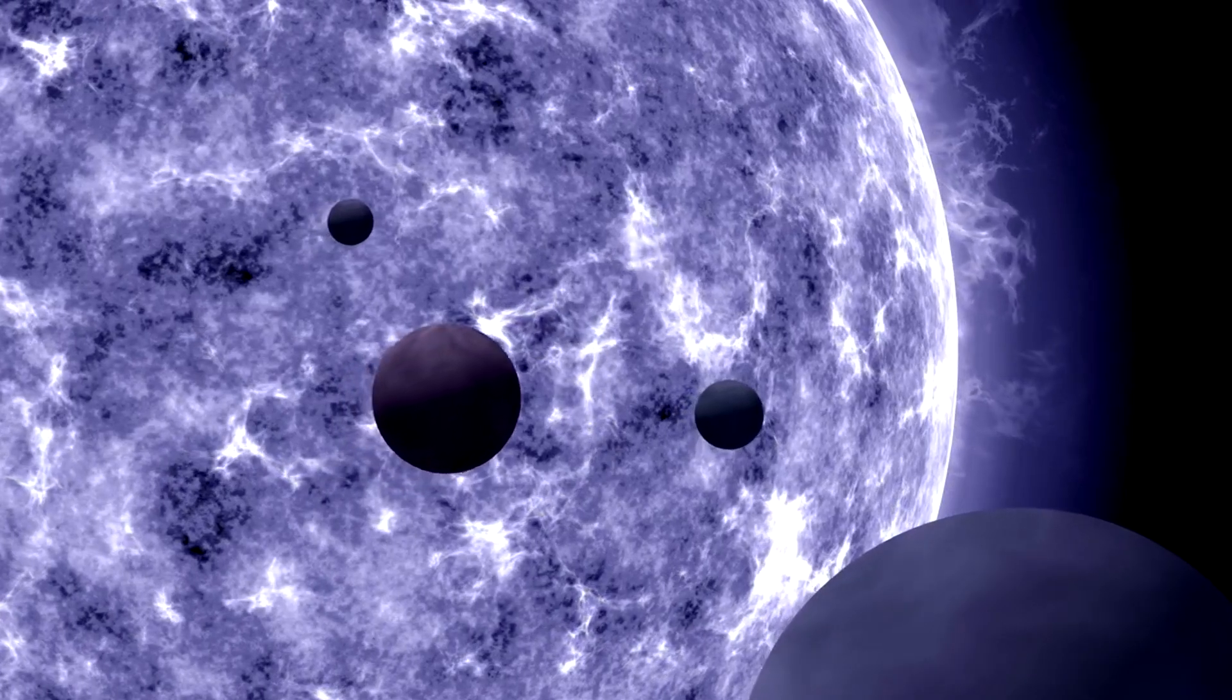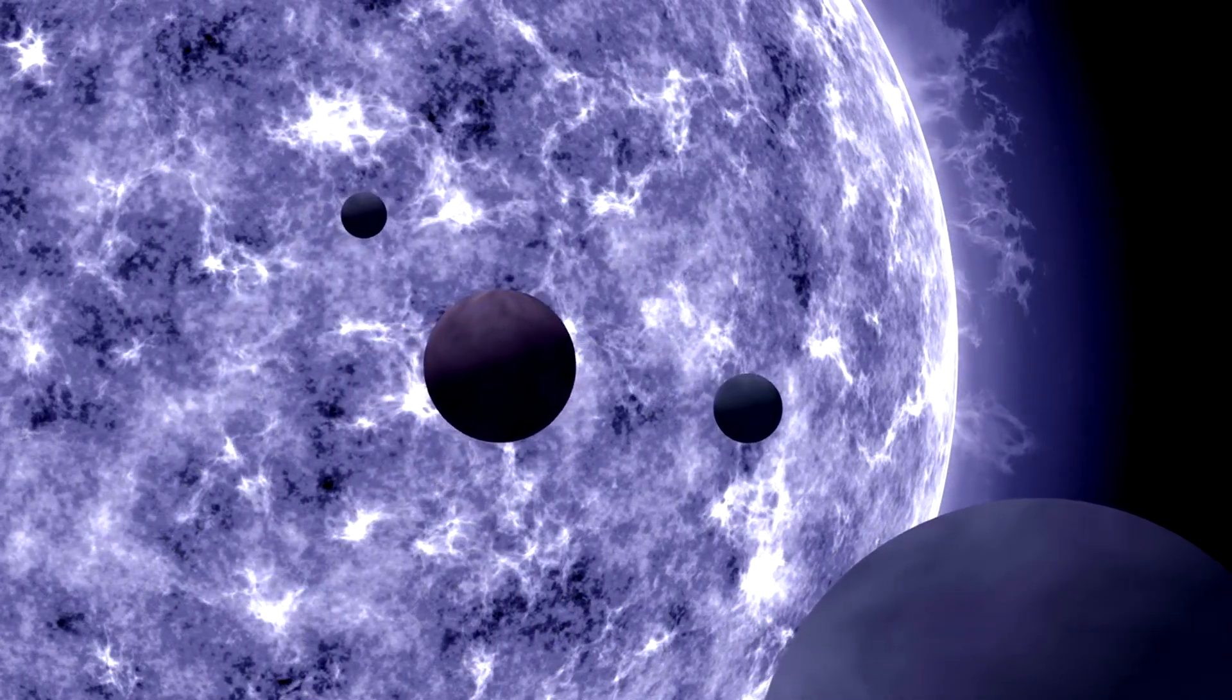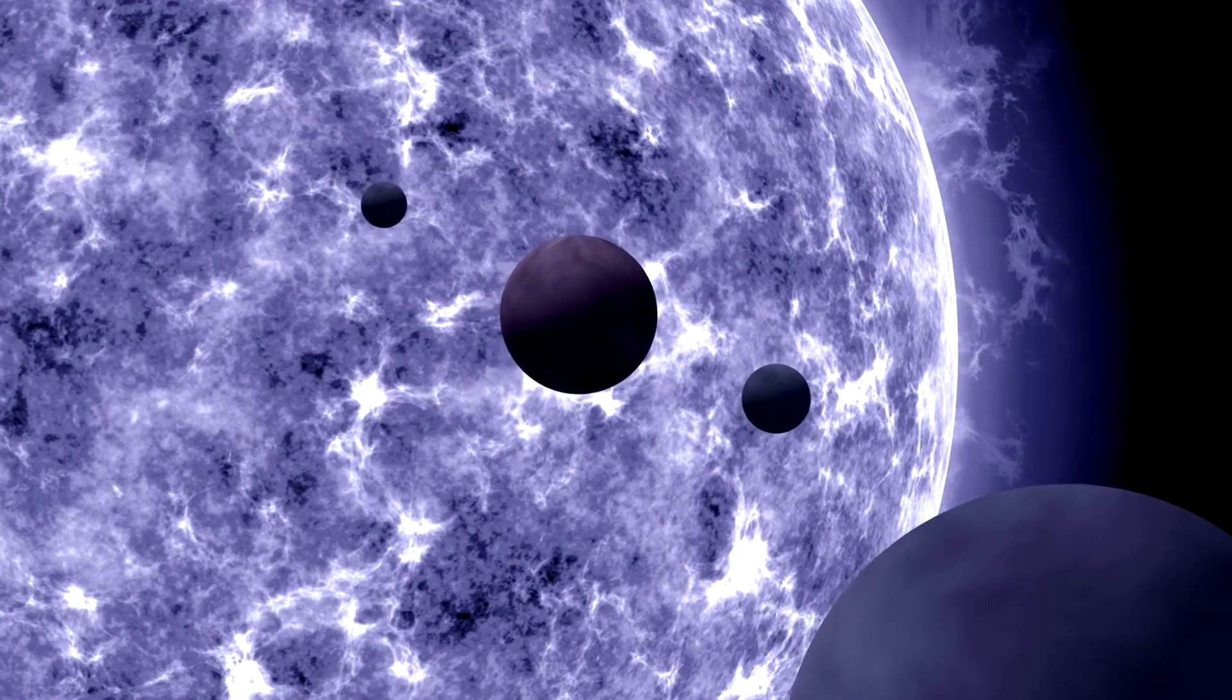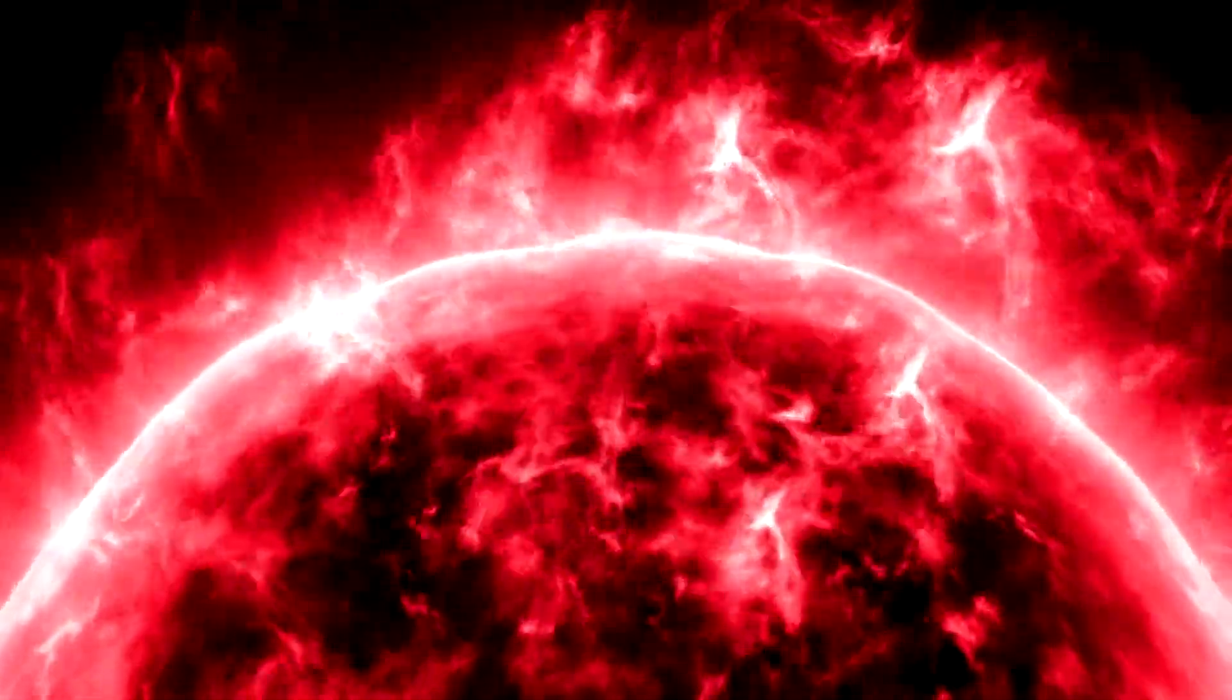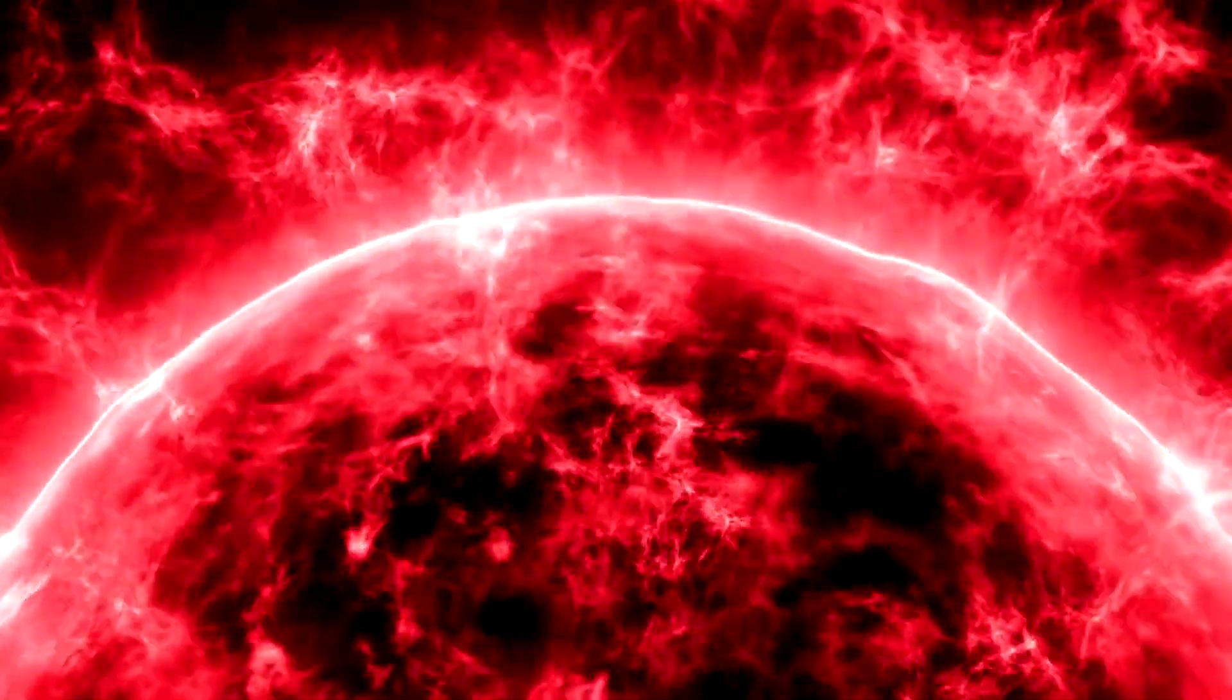All the matter that once spanned millions of kilometers has been crushed into a sphere barely 20 kilometers across, about the size of a city. Imagine taking the sun, with its unimaginable mass, and compressing it until it could fit inside Manhattan. That's a neutron star.